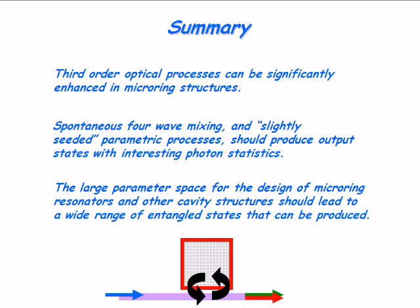The most important thing, I think, is that there's a large parameter space for the design of microring resonators and other cavity structures. I indicated that there are analogous systems that will behave in the same way as these microring structures. I think a lot of those deserve to be looked at. A lot of these structures should lead to a wide range of entangled states and other kinds of interesting states with quantum statistics that I think are well worth exploring. Some of them might even be useful.